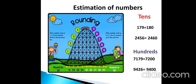The last topic is estimation of numbers, which means rounding off to the nearest numbers. If a number's relevant digit is less than 5, we round down to the nearest lower value. If a number's relevant digit is 5 or greater — that is 5, 6, 7, 8, or 9 — we round up to the next upcoming nearest number.